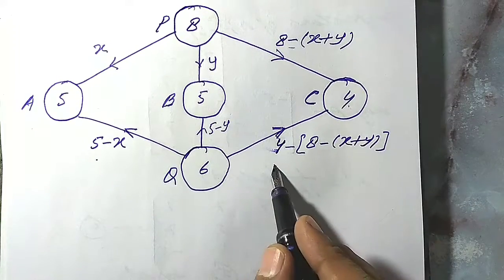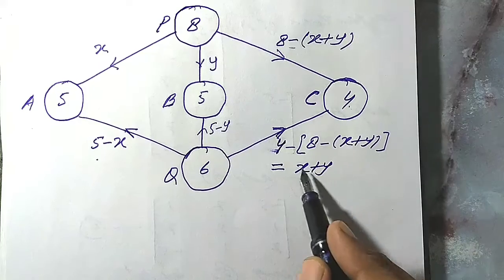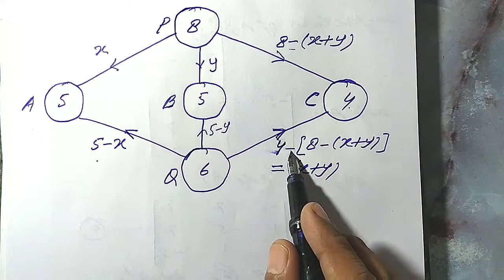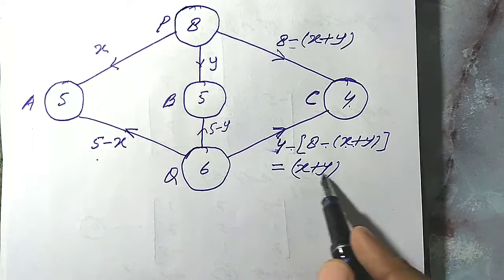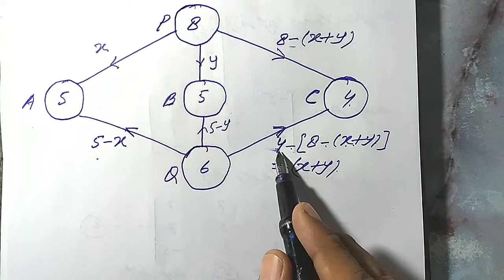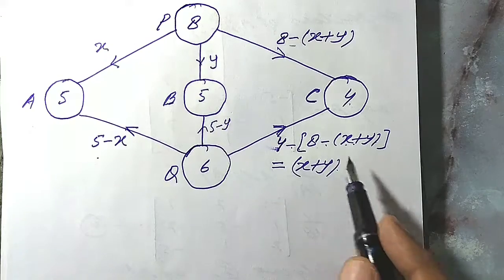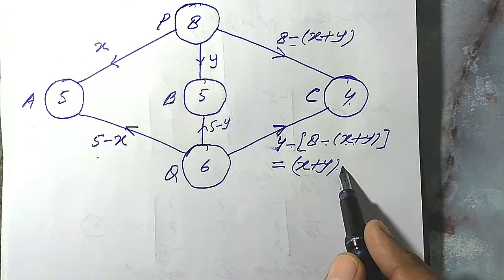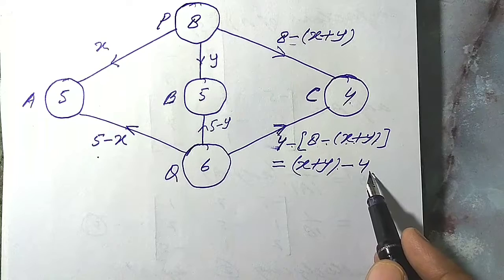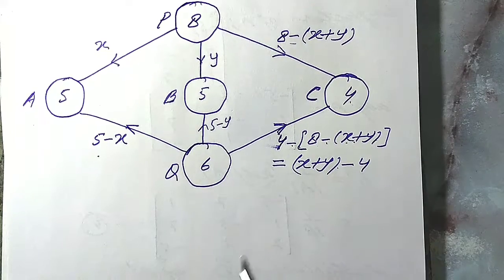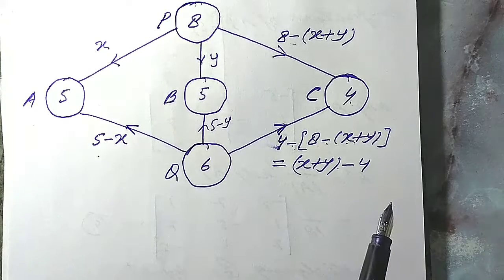That will be the total requirement minus the number of units received from factory P: 4 minus [8 minus (x plus y)]. If we simplify this, we get x plus y minus 4 — because of the negative sign, the bracket becomes positive, so x plus y, and 4 minus 8 gives minus 4, resulting in x plus y minus 4. So our diagram is completed.